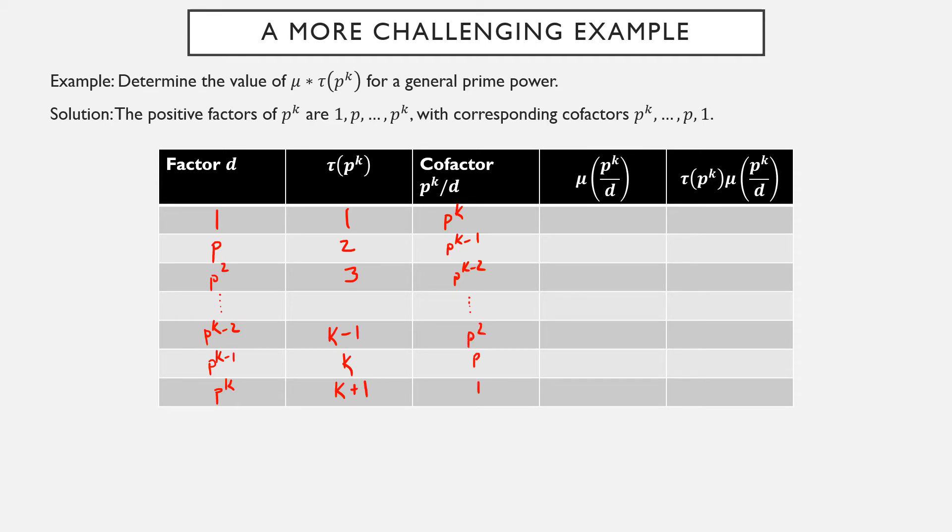Now, mu of these numbers is pretty nice because remember mu of 1 is 1. We're going to go up from the bottom. Mu of a prime is negative 1, but mu of any higher power of a prime are all going to be zeros because all of these high powers of prime numbers have a square that can be factored out, p² in particular. Now, when I take the product, a lot of them turn out to be zero because of the mu function. And here I get negative k, and here I simply get k + 1. And now all I have to do is add up the last column, and that's pretty straightforward. No matter what, mu star tau of p^k is equal to 1.